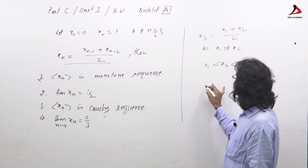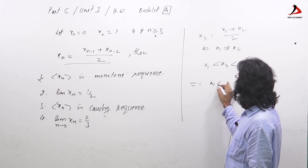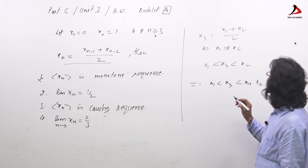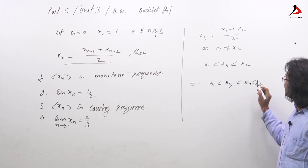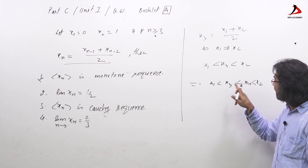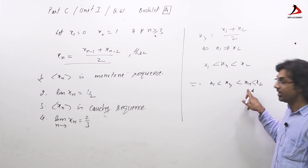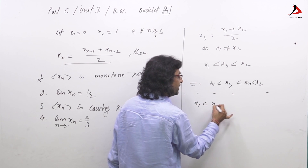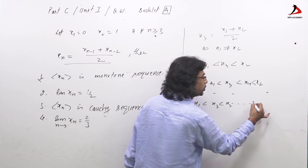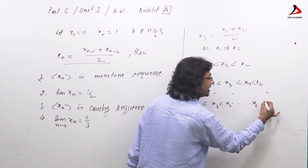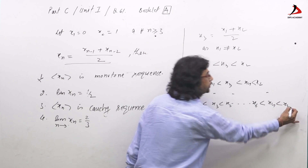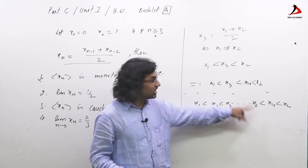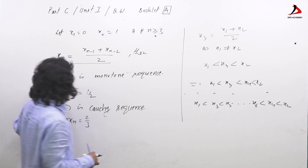Writing the terms out: x₁, x₃, x₄, x₂ — the term x₄ is the arithmetic mean of x₃ and x₂. Continuing this pattern we get: x₁, x₃, x₅, … and x₆, x₄, x₂. We can see that the sequence is certainly not monotonic, confirming the first option is discarded.